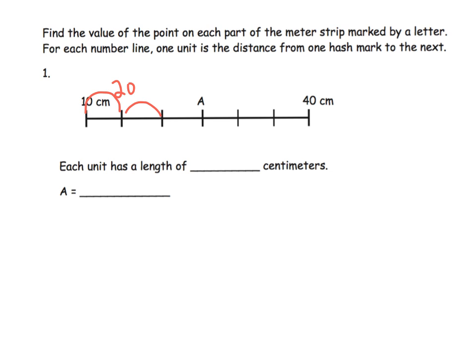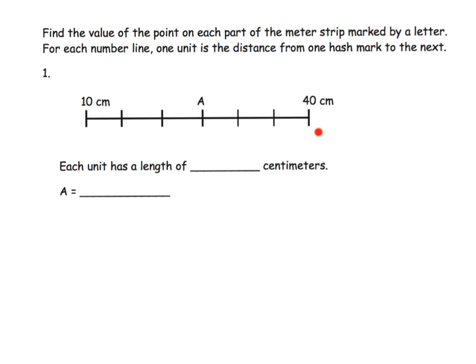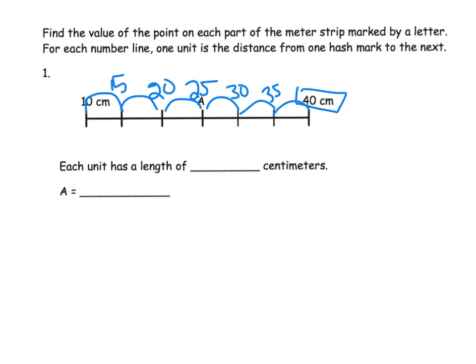Let's try going up by tens: 10, 20, 30, 40 — but that's not right because we're at 40 here but we wanted 40 to be all the way over at the end. So going up by tens is too big. Let's try going up by fives: 15, 20, 25, 30, 35, 40 — that works!